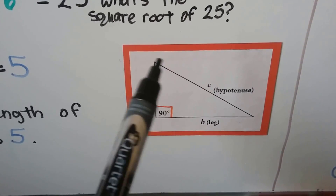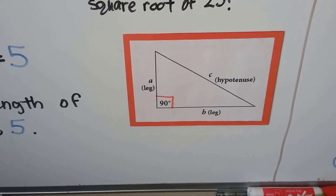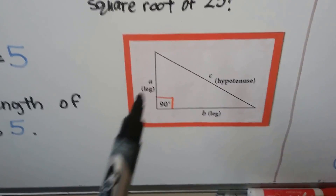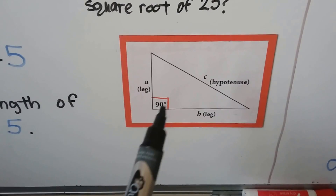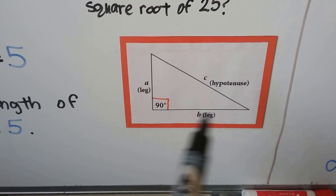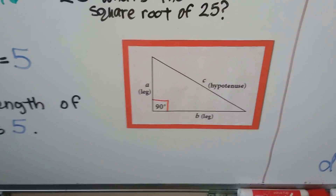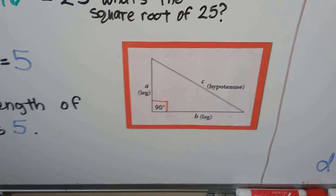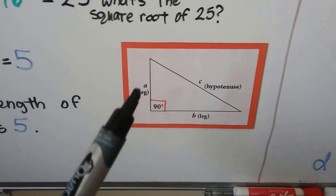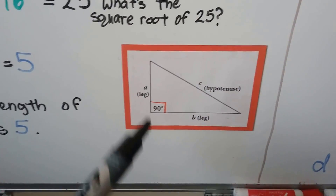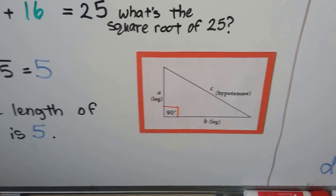This long line for C is called the hypotenuse — on a right triangle, that's the 90-degree angle. This long piece is called the hypotenuse, and we're going to talk about that more when we get into geometry. These shorter sides are called legs, but we're using them as the rise and the run.